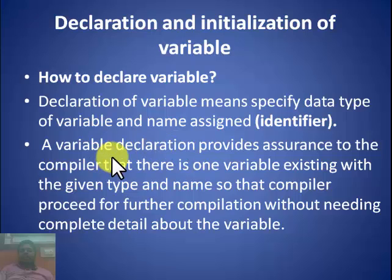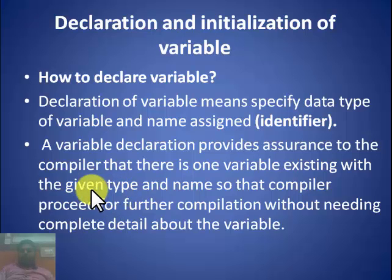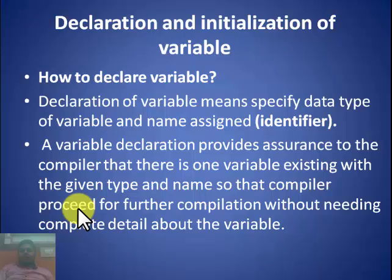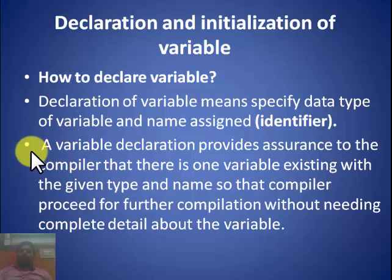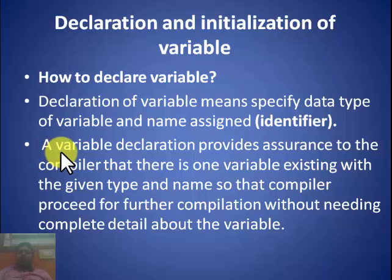Why is variable declaration needed? It provides assurance to the compiler that a variable exists with the given type and name, so it can compile without needing complete details. In C language, you cannot use any variable without declaring it first. First we declare the variable, which allocates memory, and then we store a value in it. So declaration is a must before using any variable.